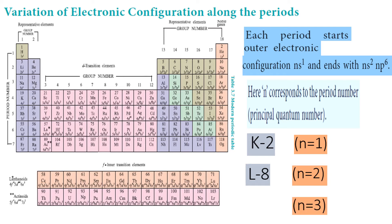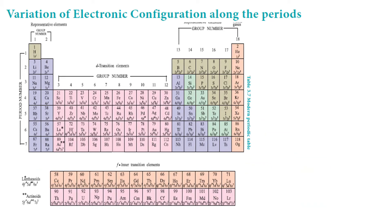When N equals 3, that is the M shell, with a maximum of 18 electrons. So N equals 1, 2, 3 correspond to K, L, M shells respectively.